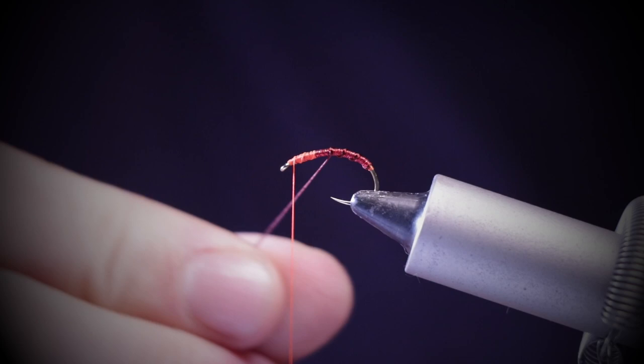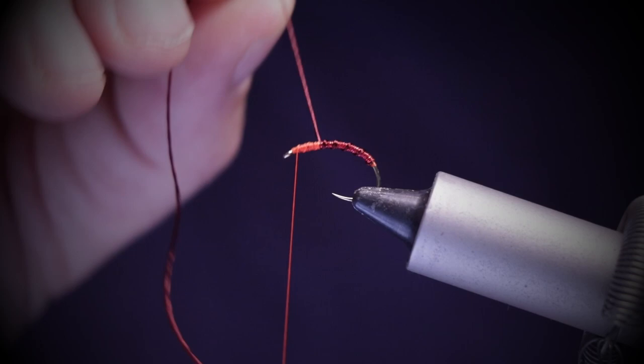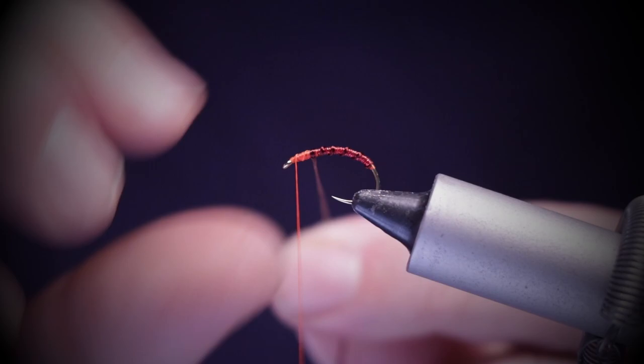Just bring that thread to the front. You can see I've created a nice little rib section there, and then I'm going to unwind the floss slightly and start to wind across the thorax to create the head of the fly.